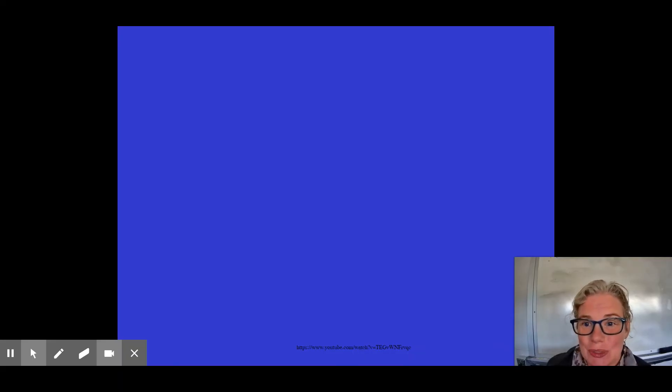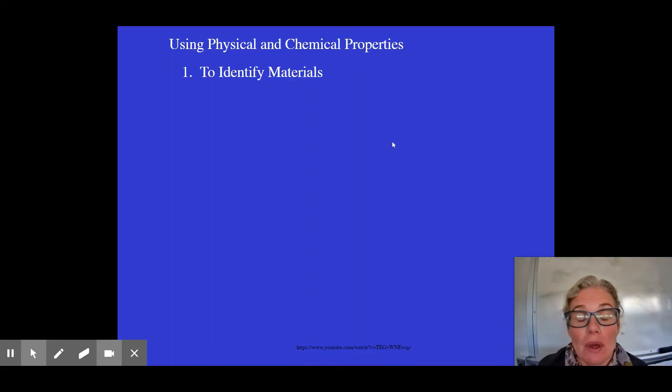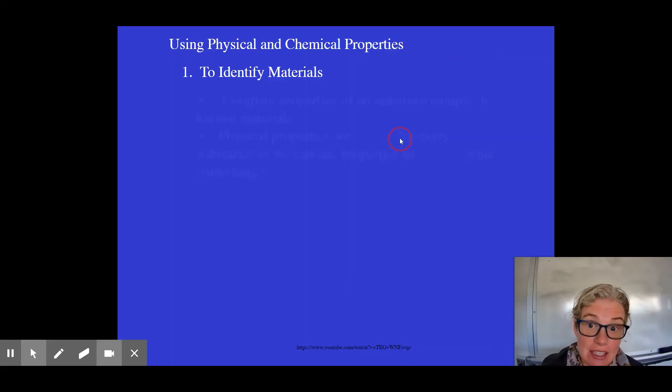So why do we care about physical and chemical properties? They can be really helpful in allowing us to identify things. In particular, a use for this would be a crime scene.